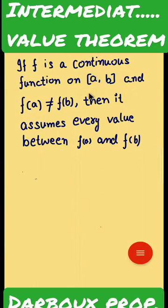This property shows that if f is a continuous function on [a, b] and f(a) ≠ f(b), then it assumes every value between f(a) and f(b). If any k number lies between f(a) and f(b), then there must exist a c which lies between interval a